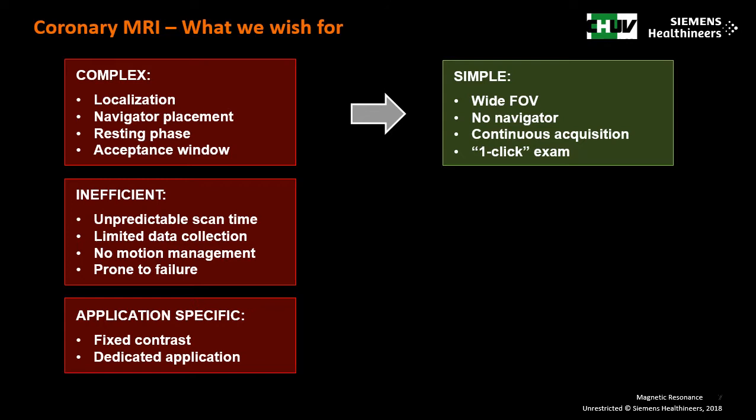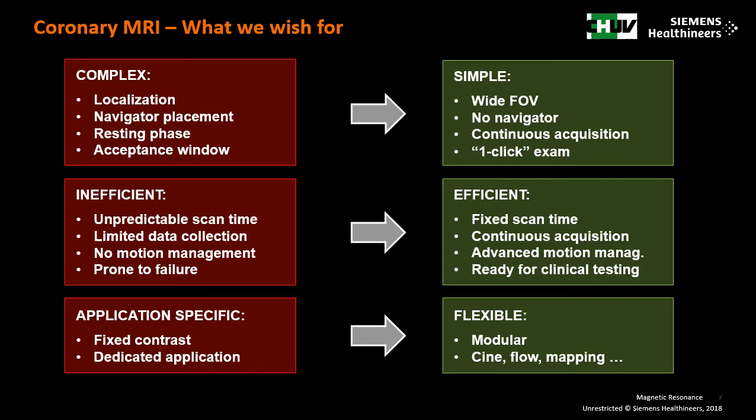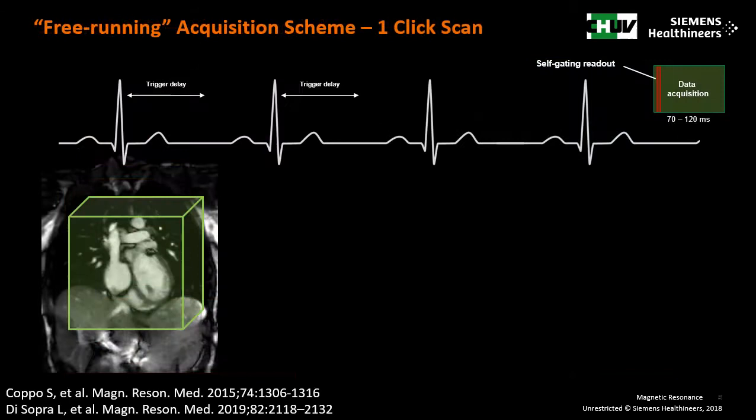This means a wide field of view that covers all the anatomy of the heart, no navigator placement, a one-click start, and a continuous acquisition. Secondly, the scan should become feasible in clinical routine, therefore we want a fixed scan time. This also means continuous acquisition and that we have to take care of motion management in an advanced manner in the reconstruction. Last but not least, we envision that the scan could be somewhat modular so that other information besides anatomy could be extracted, like cine, flow, and eventually mapping.